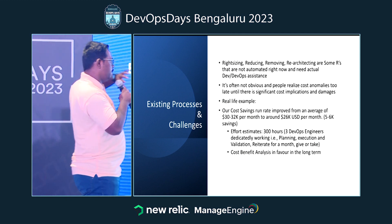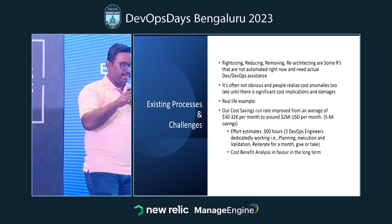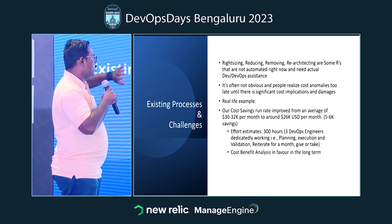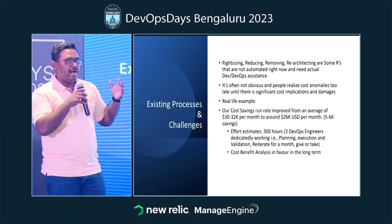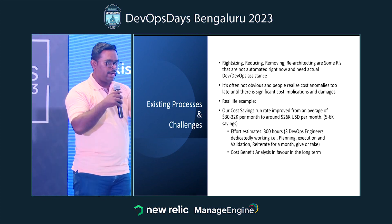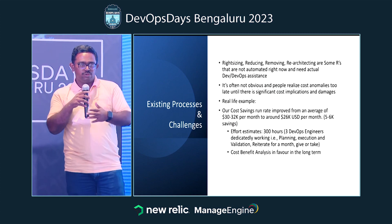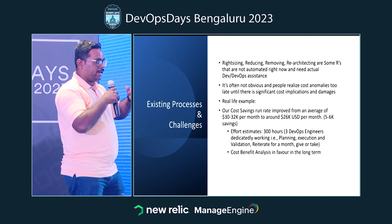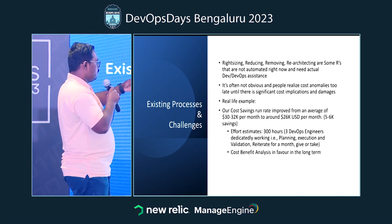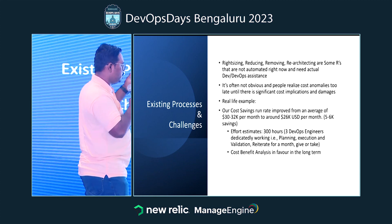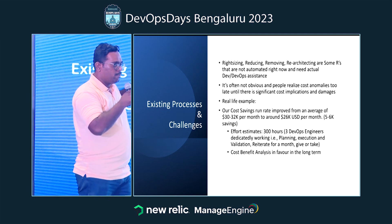Let's understand the problem statement in more detail. While everyone talks about cost optimization, very few people get into the crux of it — starting from right-sizing, reducing, removing, and re-architecting. Cost optimization anomalies can take time to become obvious. As a real-life example, we had a monthly run rate of $32,000 USD and brought it down to $26k — entirely through a manual approach with three DevOps engineers working for around a month.